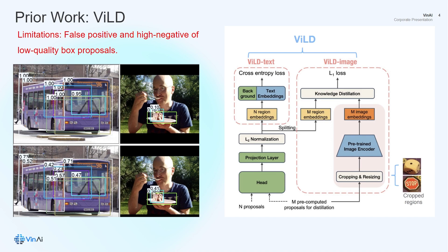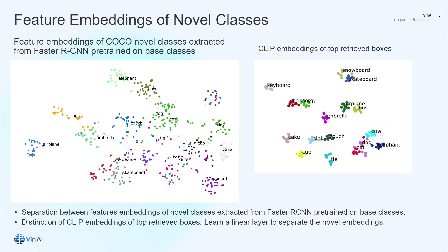This figure in the second row shows both proposals with more precise scores obtained by our approach. Our finding is that the features extracted from the penultimate layer of a Faster RCNN model are highly discriminative among novel classes, as shown on the left. Furthermore, when we retrieve the top proposals for novel categories, the embeddings from these boxes are also well separated. Therefore, we propose learning a linear layer on top of that penultimate layer for the novel classes using top-retrieved boxes as pseudo-labels.